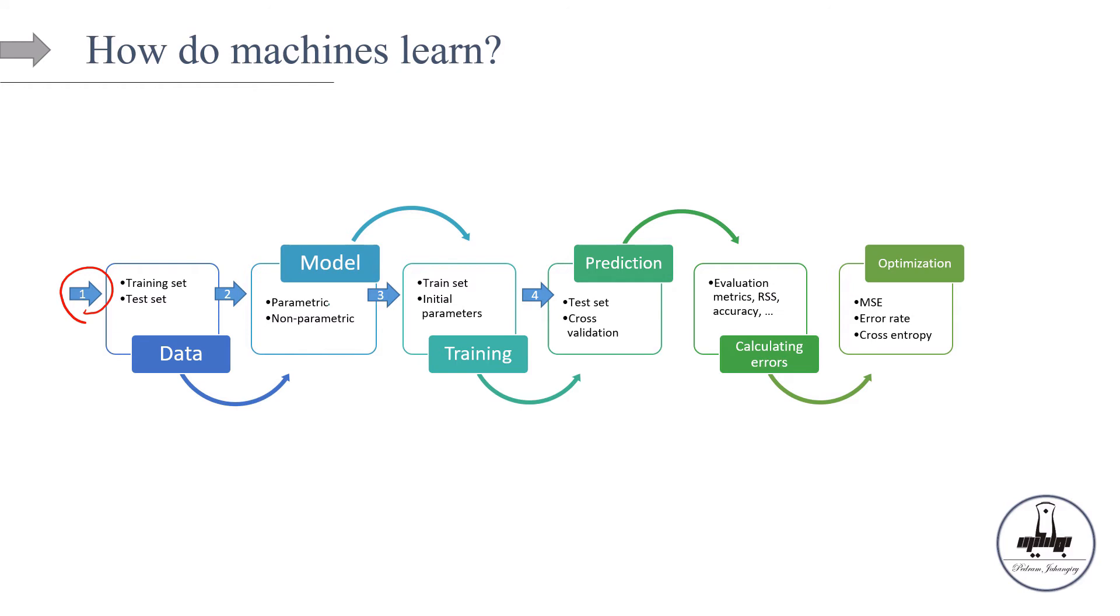Later on, we will use these cross-validation predictions for tuning the hyperparameters and comparing the models in general. Next step, now with the predictions in hand, we can calculate the errors and then report some evaluation metrics like RSS, residual sum of squares for regression analysis and accuracy for classification.